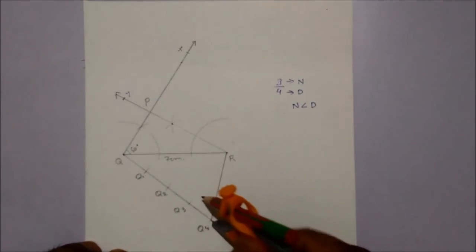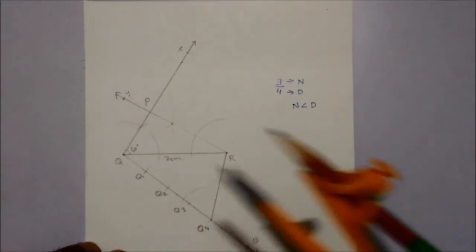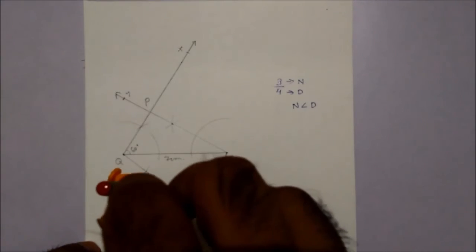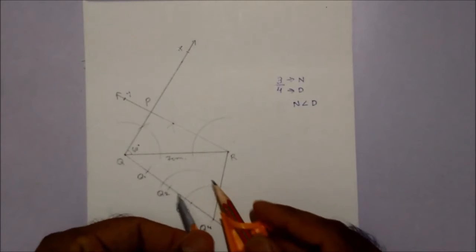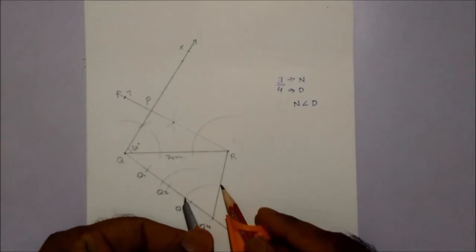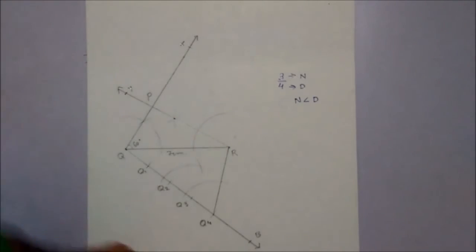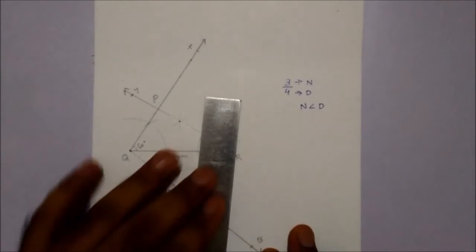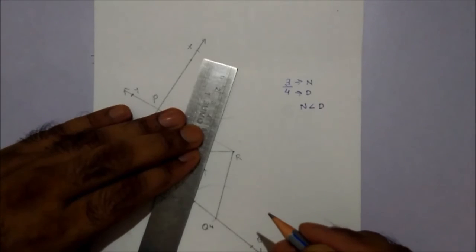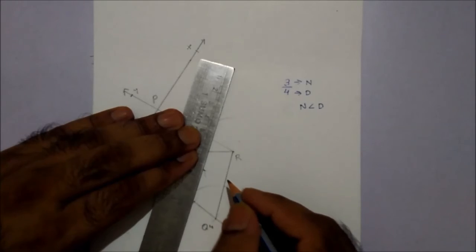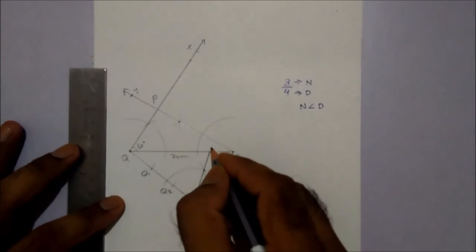Again by some radius, with the same radius, then taking Q3 at the center, one more arc. Now measure the arc and with the same radius, intercept the arc. Join this with Q3. So this is our new triangle's point C.